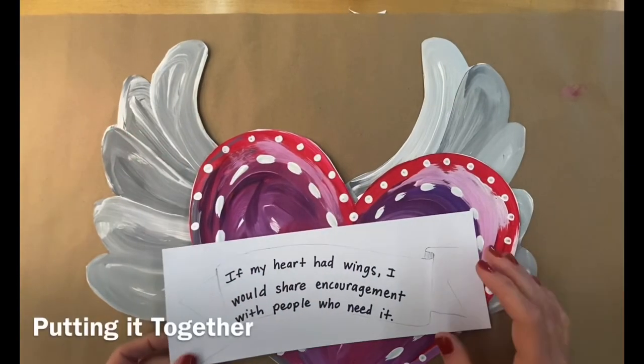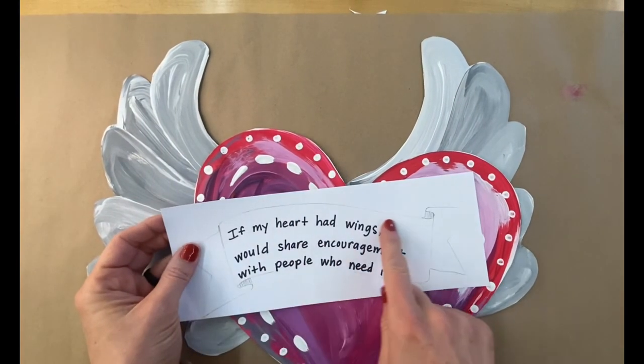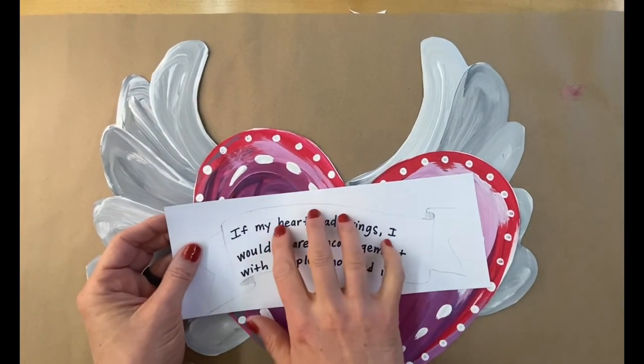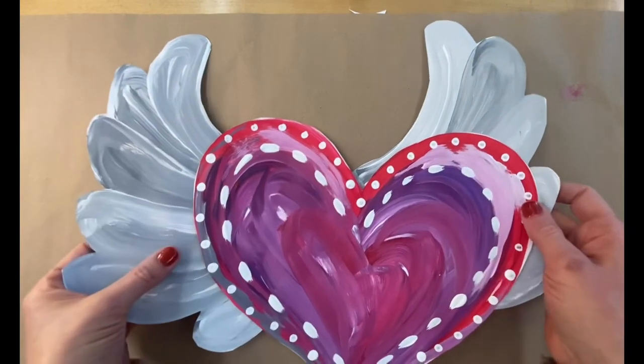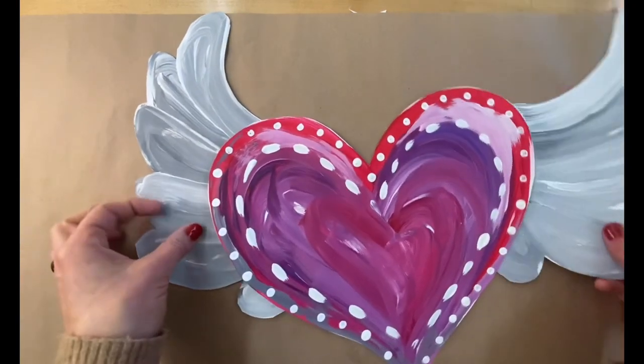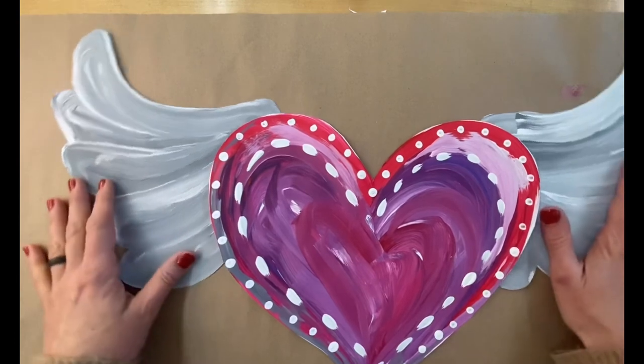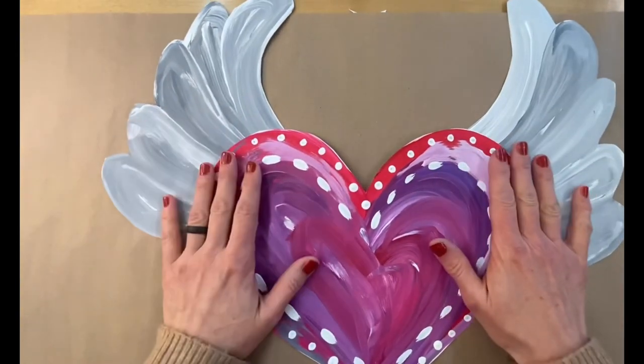The last step in this project is to put it all together. So in a moment I'm going to cut out my banner so that I can attach that to the front of the heart. I'm also going to use my glue stick to glue the heart onto the wings, and I can really kind of play around with this and see what effect I like the best. So feel free to do that.